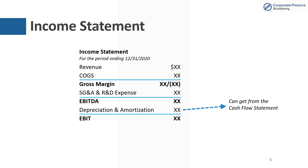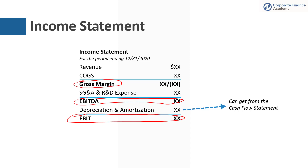Now, looking at the income statement and how you get to EBITDA and EBIT: as you look down, you start with revenue and cost of goods sold, which gives you your gross margin. Then you take SG&A and R&D expense, and once you subtract those two, you're left with EBITDA. Step down once more and take out depreciation and amortization, and that gets you EBIT. Sometimes this may not be specifically called out on the income statement, but you can usually get it from the cash flow statement if you need to.